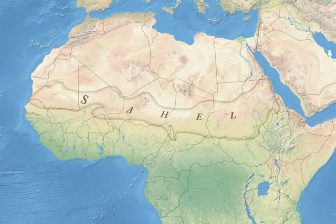Historically, the western part of the Sahel was sometimes known as the Sudan region. This belt was roughly located between the Sahara and the coastal areas of West Africa.